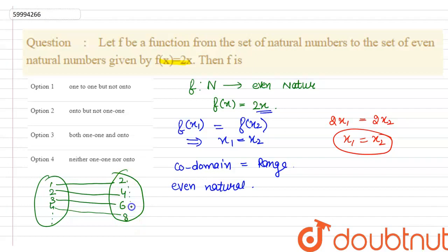If we look at the range, we see even natural numbers. The codomain is even natural numbers. So our function is onto. Since it's one-one and onto, the answer is both one-one and onto. Thank you.